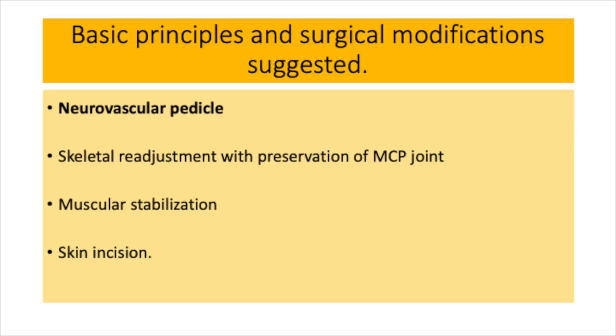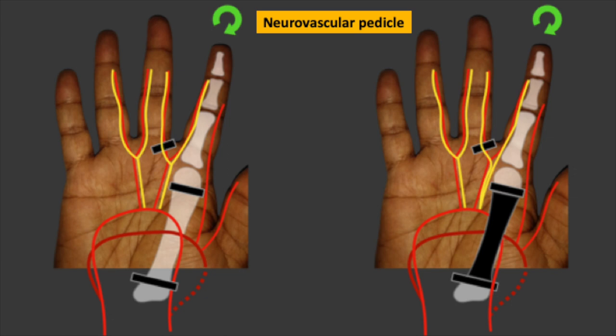The basic principles and surgical modifications suggested by Buck-Gramcko address four areas: the neurovascular pedicle, skeletal readjustment, muscular stabilization, and skin incision. At the neurovascular pedicle level, the digital artery going to the radial side of the long finger was divided, and the digital nerve is dissected proximally so that the pollicized index finger can be mobilized without any problem.